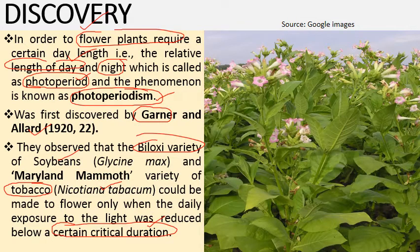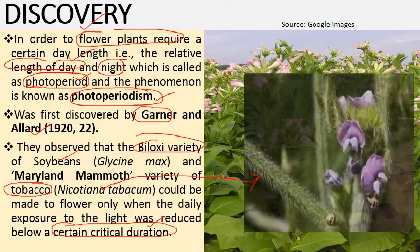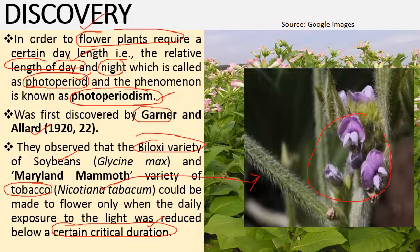This is the plant of tobacco, and this is the flower of soybean, Glycine max. These are plants which are basically short day plants — flowering occurs only when the day duration is less than the critical day length.